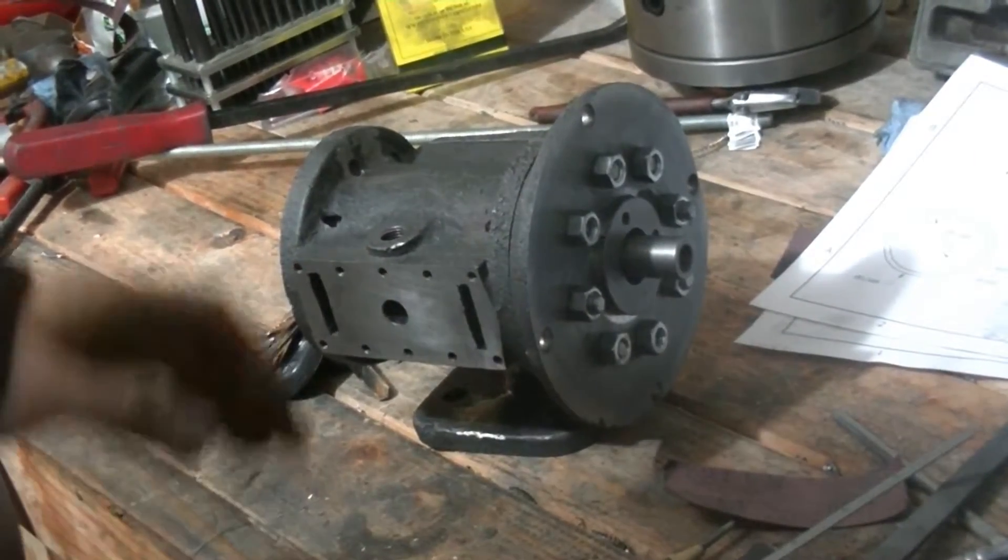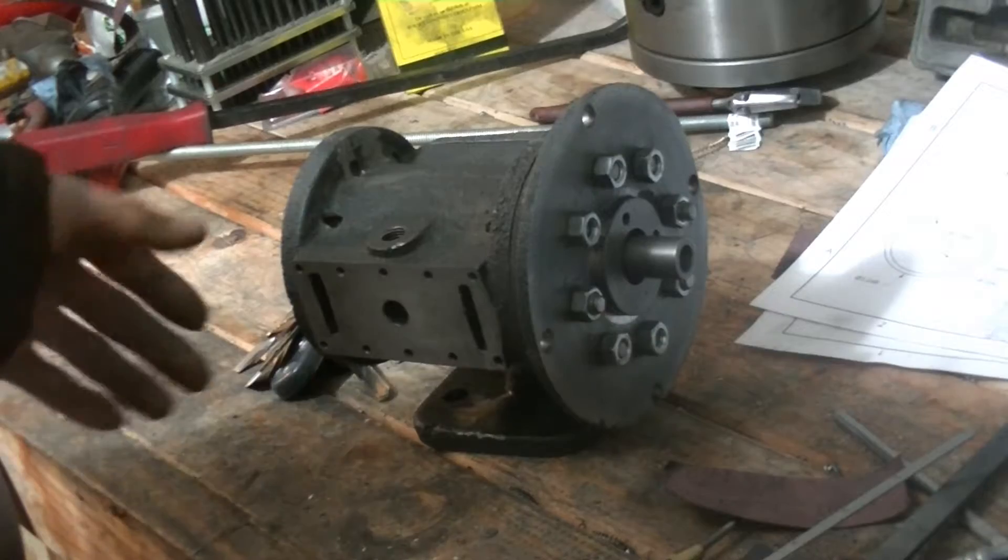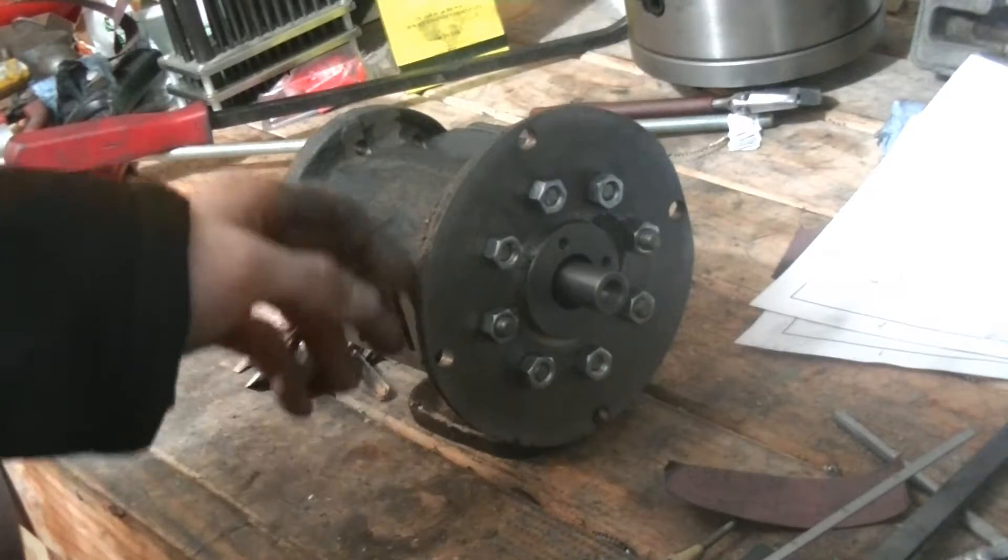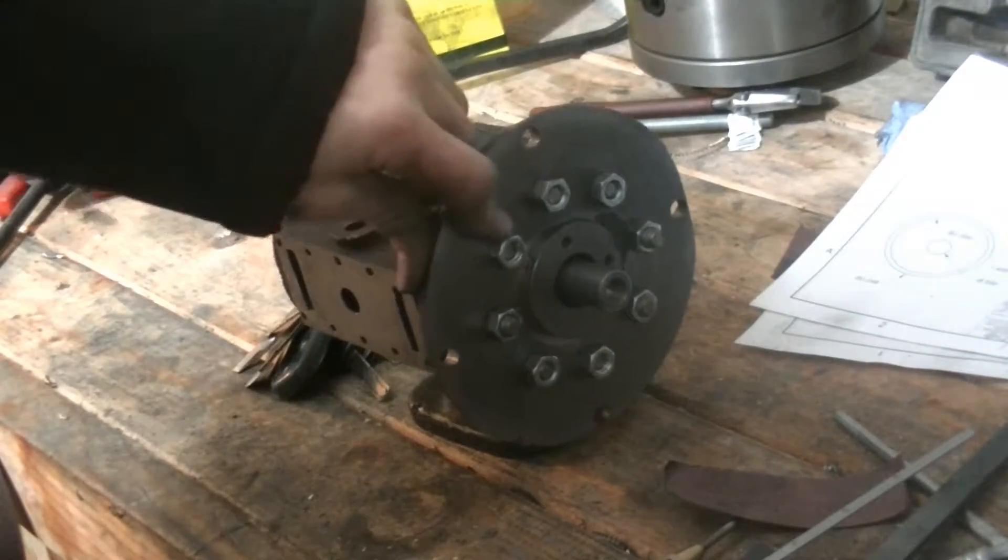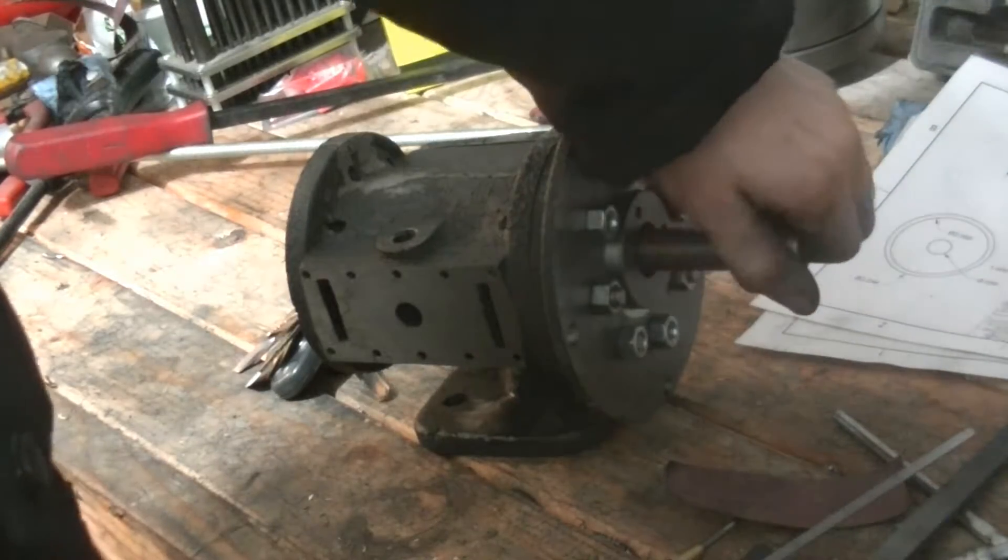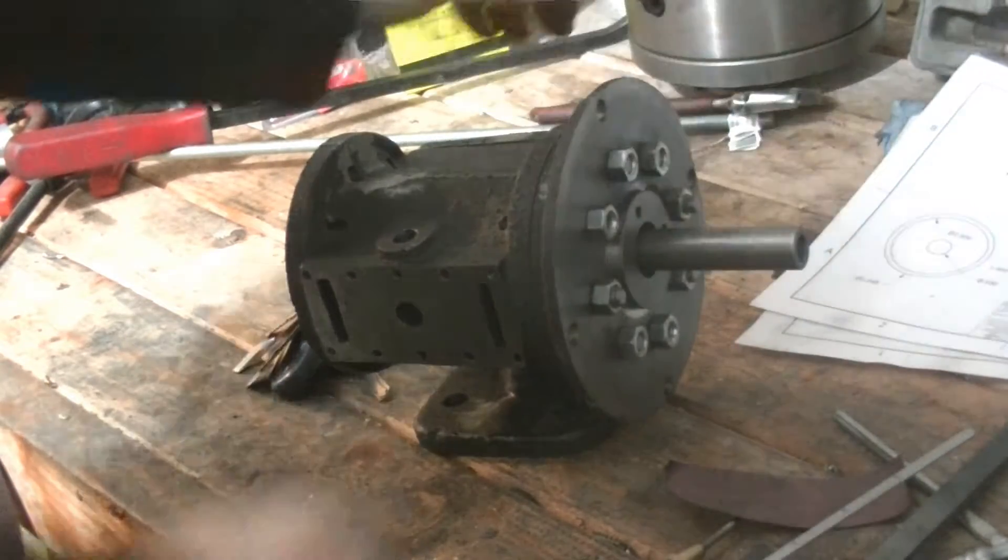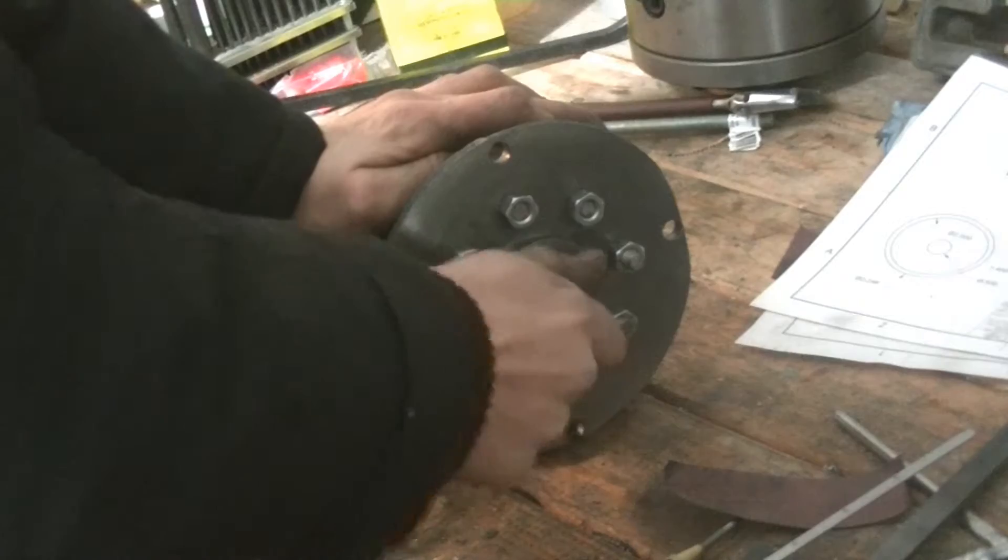Today we're making what's called the crosshead. In a previous video we finished making this bottom cylinder head, and now the top end of the engine is starting to really come together.